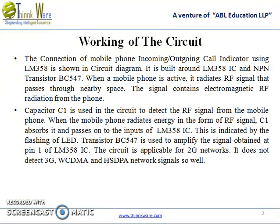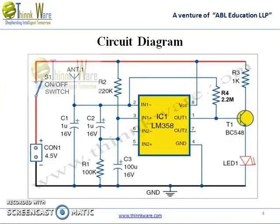Talking about the working of the circuit: the mobile phone incoming or outgoing call indicator uses LM358 IC, as shown in the circuit diagram. It is built around LM358 IC and NPN transistor BC547. When a mobile phone is active, it radiates an RF signal. RF signal is a radio frequency signal that passes through nearby space and contains electromagnetic RF radiation from the phone.